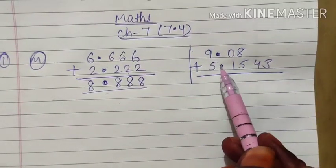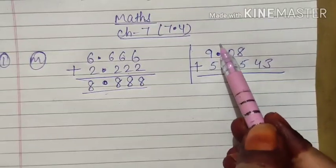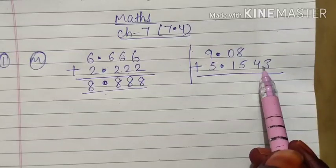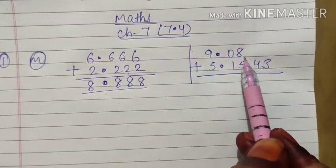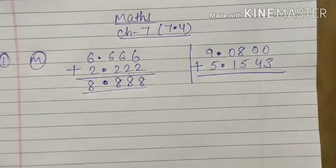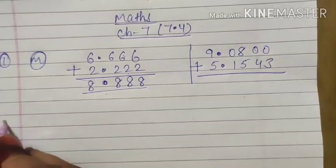If you have such an addition, first of all you have to take care that both the decimals must be in the same line. Here you have four numbers after decimal, right-hand side of the decimal. Here you have two numbers, so you can put here two zeros and then you can add them simply. Likewise you have to do in question number 2.